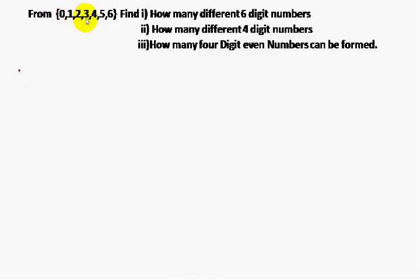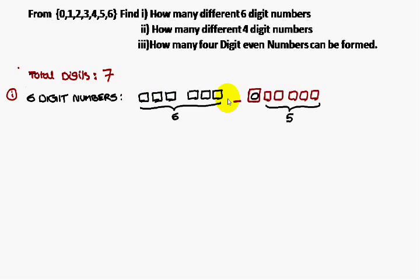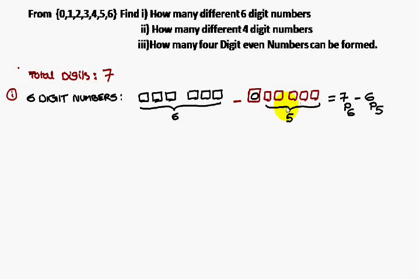Similarly, from the numbers 0, 1, 2, 3, 4, 5, 6 — total seven digits — first question: how many different six-digit numbers can be formed? We have six blanks and seven digits. Since zero cannot lead a six-digit number, we compute 7P6 ways minus the numbers starting with zero. For numbers starting with zero, five remaining blanks are filled with six remaining digits: 6P5.